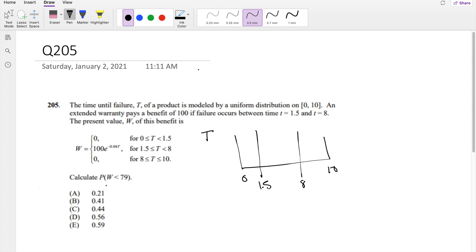We're trying to find the probability that the benefit is less than 79. If the benefit is less than 79, that includes the part where benefit equals 0. Benefit equals 0 right here, from 0 to 1.5 and 8 to 10.